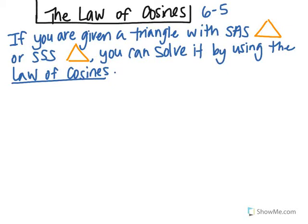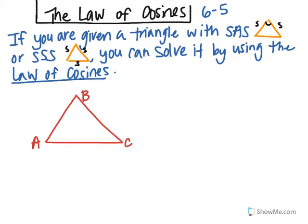In section 6-4 we're going to talk about the law of cosines. If you're given a triangle with side-angle-side — a side, an included angle, and then another side — you can use the law of cosines to solve it. Or if you're given all three sides: side-side-side. We start with a triangle with angles A, B, C, where the side opposite angle A is little a, opposite angle B is little b, and opposite angle C is little c.